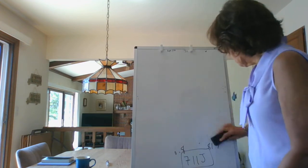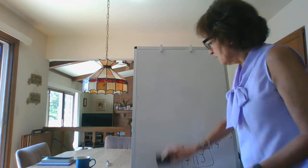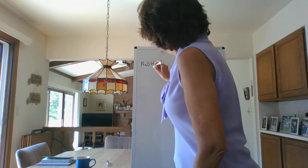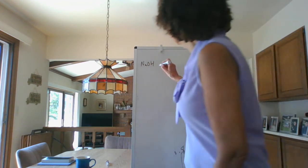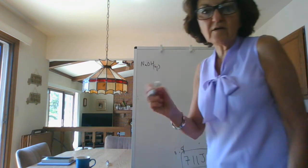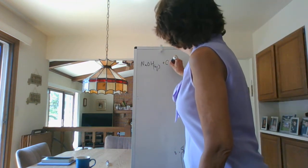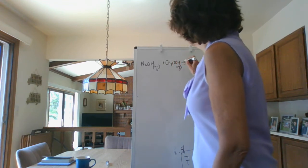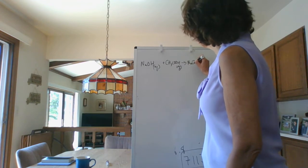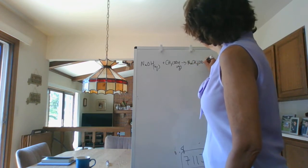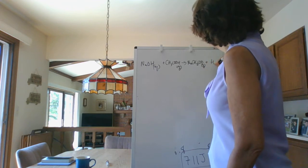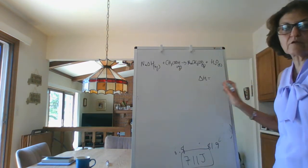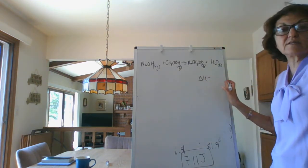When we write a thermochemical equation, we write: sodium hydroxide aqueous solution, NaOH (aq) - remember we have to always write down the phases - plus acetic acid, CH3COOH (aq), will give you sodium acetate, NaCH3COO (aq), plus water. Delta H equals, this is what will make it a thermochemical equation, or q is equal to, now we need to know what to put here.